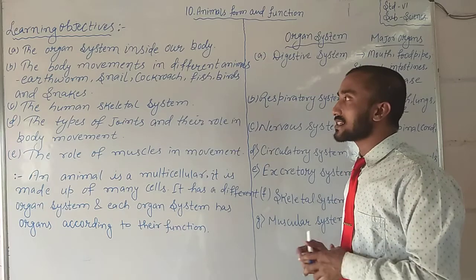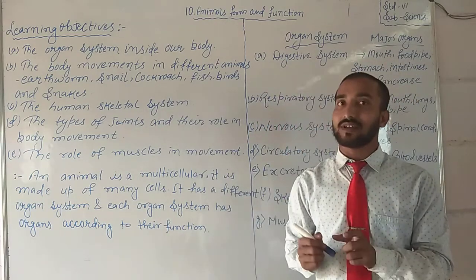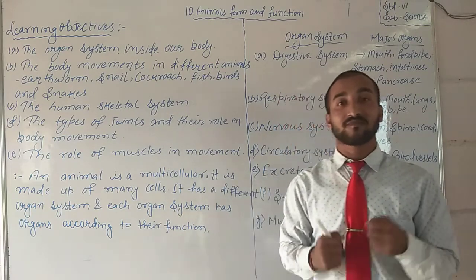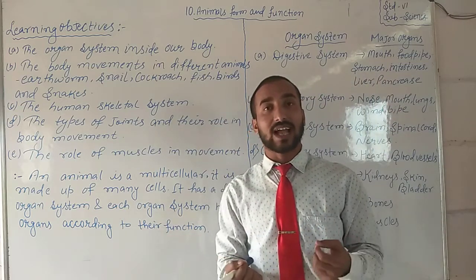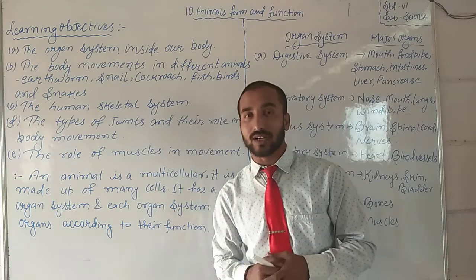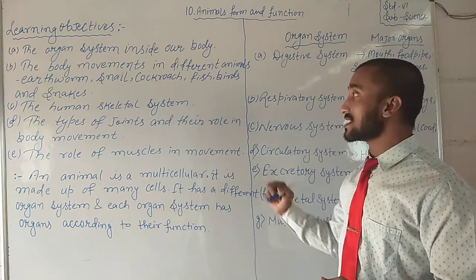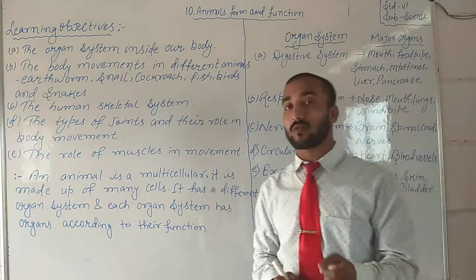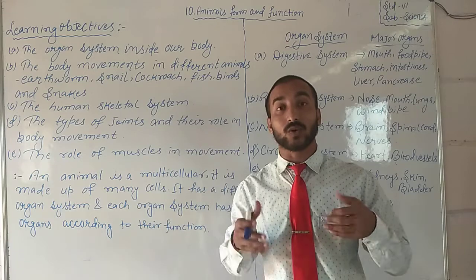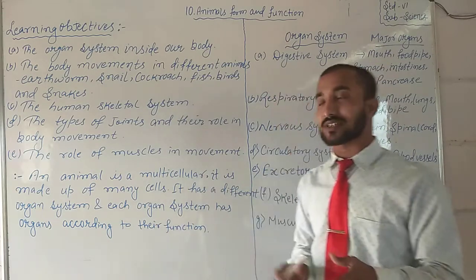Number three is the human skeletal system. Animals form and function — it means humans are also a category of animal. In this chapter, we will know about the human skeletal system: how the human body is structured, how the human body is looking or functioning. We will collect all information regarding humans.